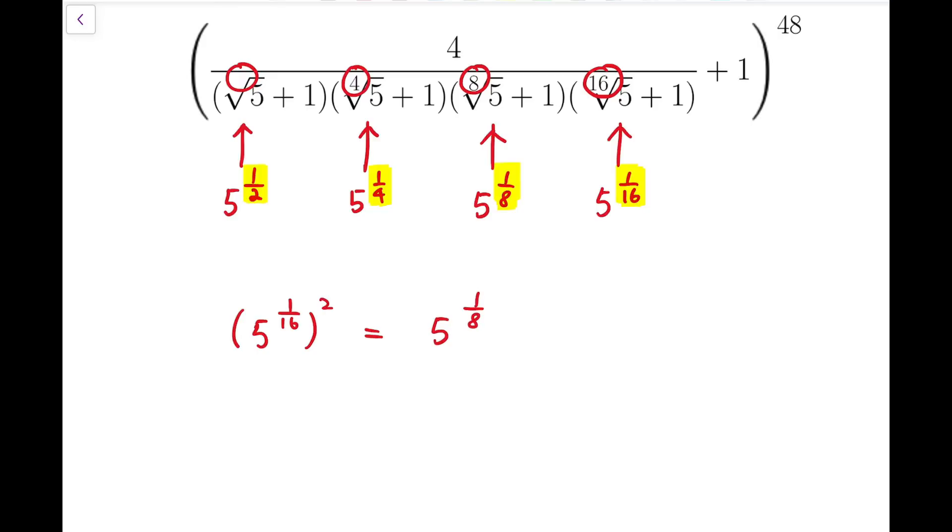But if I square something, I'm actually doubling the index. So if I do a further square, then it will become 5 to the power 1 over 4. If I do a square again, then I will get 5 to the power 1 over 2. So in fact, it's kind of squaring the term 5 to the power 1 over 16 again, and again, and again.